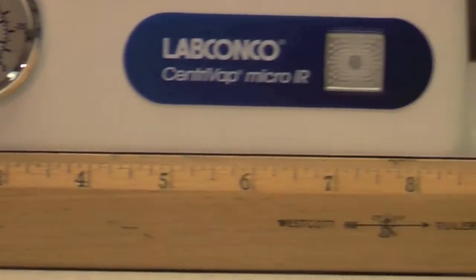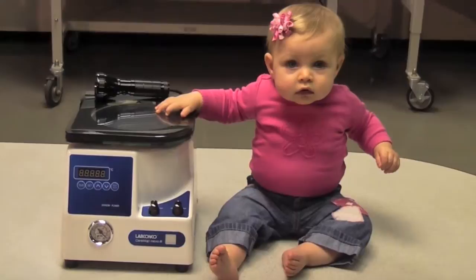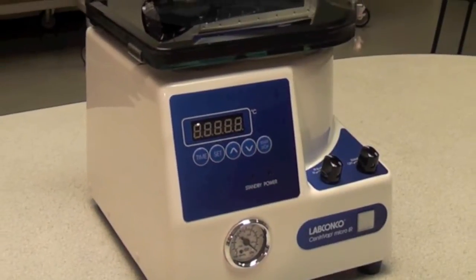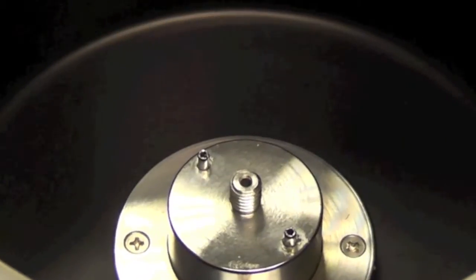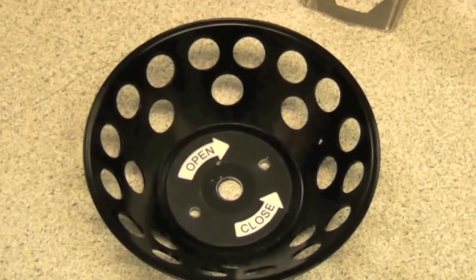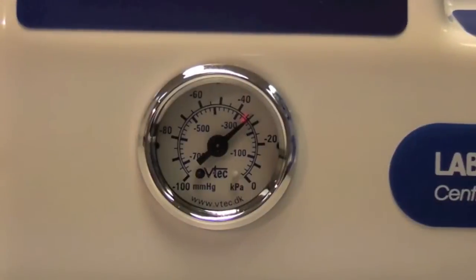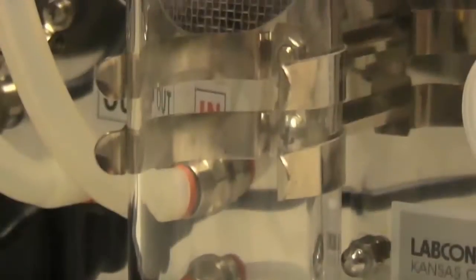Everything about the CentriVap Micro-IR is small, except its many features. Everything is included with the IR, including the Teflon-coated chamber, diaphragm vacuum pump, rotor, vacuum gauge, glass trap, and strobe light.